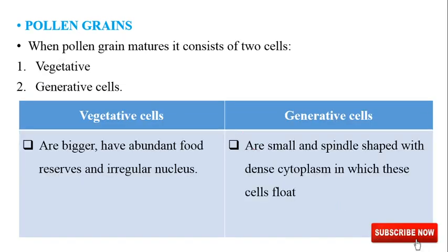After the pollen grains mature, they have two cells: vegetative and generative. The pollen grain is also known as the microspore. After mitosis, it will have a vegetative cell and a generative cell. The vegetative cell is bigger, has abundant food reserves, and has an irregular nucleus, whereas the generative cell is small, spindle-shaped with dense cytoplasm in which its nucleus is floating.